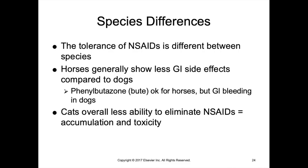The tolerance of NSAIDs is definitely related to species. The incidence of gastrointestinal side effects is reported much more frequently in dogs than in horses. Older NSAIDs like phenylbutazone have been used for many years in horses with very few reported GI side effects at normal doses. Dogs given traditional equine NSAIDs will show signs of gastritis and digested blood in the stool within just a few days. And if a drug is not tolerated by dogs, you can pretty much guarantee it's not tolerated by cats.